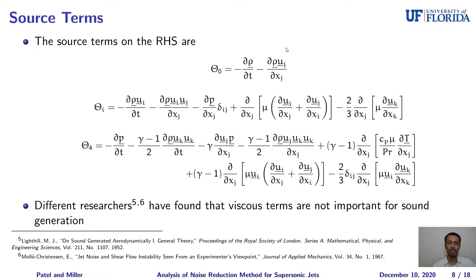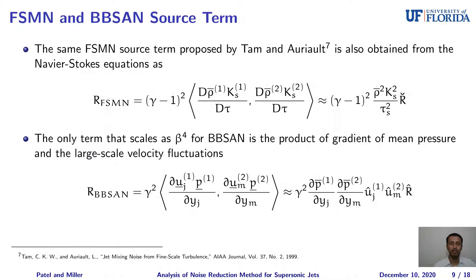The source terms on the right-hand side are shown in the slides. Theta-0 represents the source term for the continuity equation, theta-i represents the source term for the momentum equations, and theta-4 represents the source term for the energy equations. There are many terms present, and we need to find different two-point cross-correlations between different equations — on the order of 1,000 terms. We eliminate different terms using physical mechanisms; different researchers have found that the viscous terms are not very effective in sound generation, so we neglect all viscous terms. We use scaling analysis to identify the source term for shock-associated noise and directly identify the source term for fine-scale mixing noise.